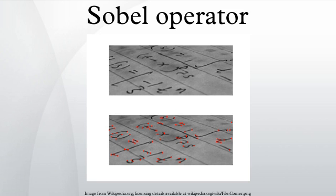If we define A as the source image, and Gx and Gy are two images which at each point contain the horizontal and vertical derivative approximations, the computations are as follows.